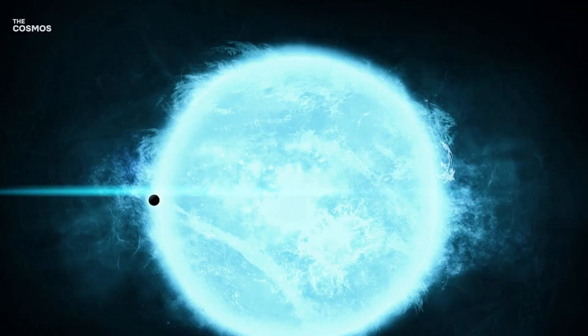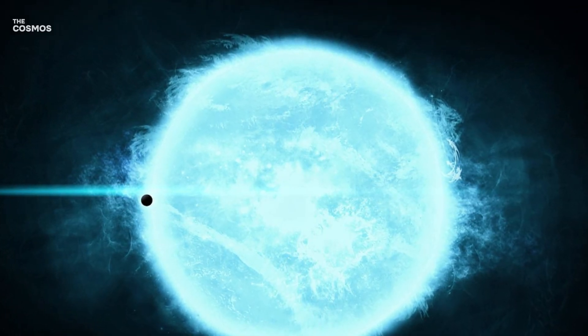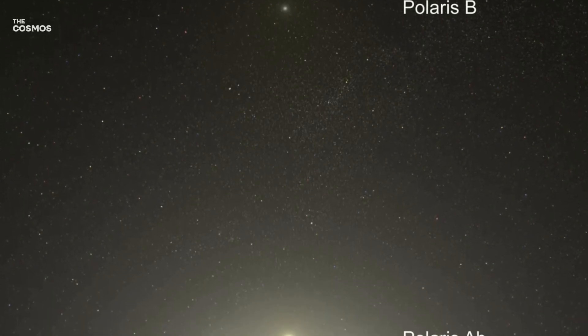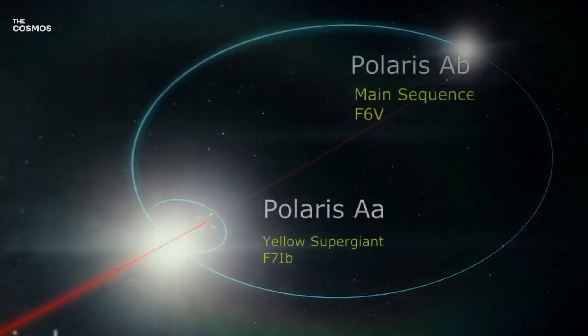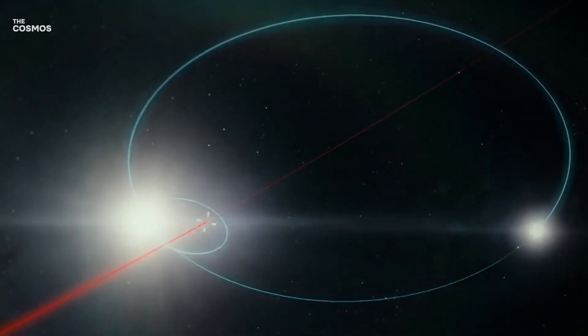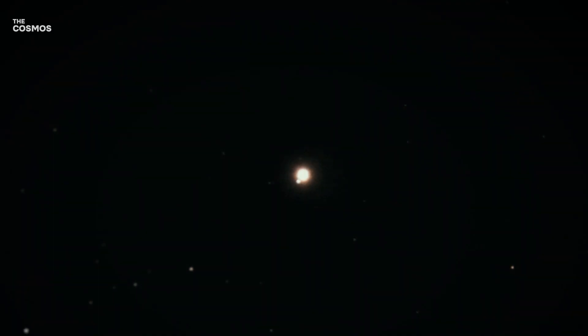Beyond its role as a navigational star, Polaris harbors secrets that can only be unveiled through the lens of a telescope. It is the primary star in a triple star system, a supergiant pulsating as a cepheid variable star. This classification is significant because cepheid variables serve as cosmic yardsticks, their pulsation rates allowing astronomers to measure distances across the universe with remarkable precision.